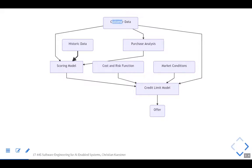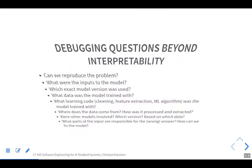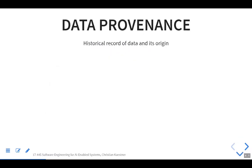So today, instead of understanding an individual model, we want to understand how all the parts came together and how a specific prediction was made. This is typically called provenance. Provenance is a term for tracking the origin and changes over the history of data — where it comes from, who changed it, how it was changed — and you want to be able to track every step and know who's responsible.